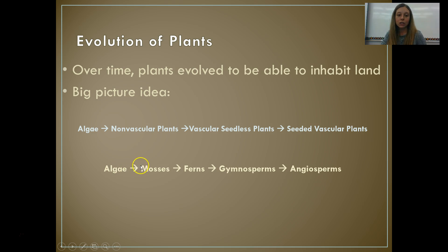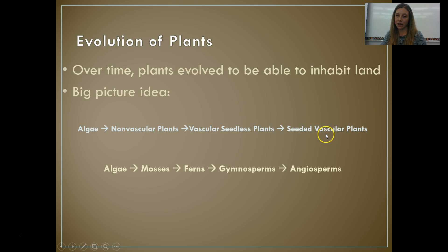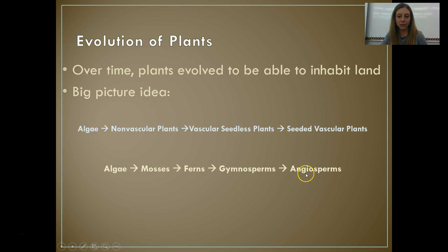We went from algae to non-vascular plants such as mosses, to vascular seedless plants such as ferns, then to our seeded vascular plants. Our first seeded vascular plants are called gymnosperms, and then our final seeded vascular plants — our flowering plants — are called angiosperms.